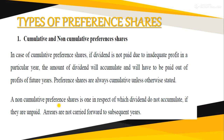Non-cumulative preference shares are those in respect of which dividends do not accumulate if they are unpaid — arrears are not carried forward to subsequent years। अगर आपके पास non-cumulative preference shares हैं तो किसी particular year में company अगर dividend नहीं दे पाई, तो future years में उन shares पर previous years का dividend नहीं मिलेगा। Current year का dividend मिलेगा, लेकिन missed dividend next years में receive नहीं होगा।